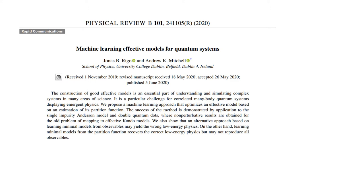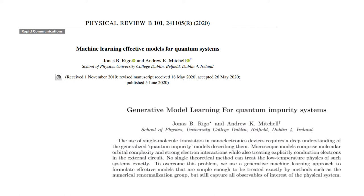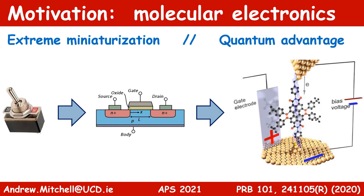The work I'll describe will be based on this paper, which appeared in Physical Review B recently, and also this preprint, which is about to appear on the archive. So first let me introduce the physical system and application as motivation for this work. Single molecule transistors are one of the fundamental building blocks for molecular electronics. They comprise a single molecule contacted by source and drain electrodes, with electrical transport properties controlled by a side gate voltage.